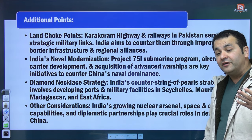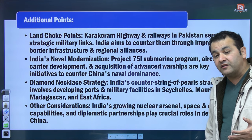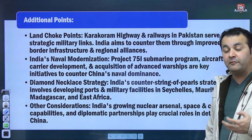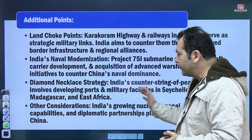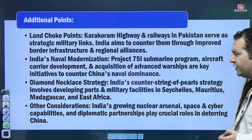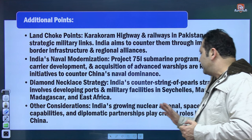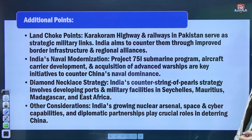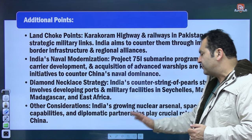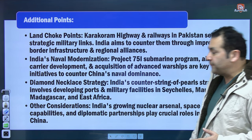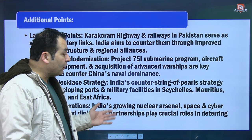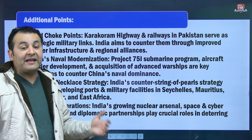India's diamond necklace strategy — India's counter string of pearls strategy — involves developing ports or military facilities in Seychelles, Mauritius, Madagascar, and East Africa. Other considerations include India's growing nuclear arsenal, space and cyber capabilities, and diplomatic partnerships, all playing a crucial role in deterring China. You should ask yourself what details you know or would like to know — comment and we can make a video for you.